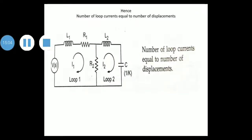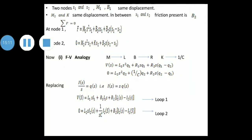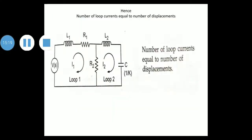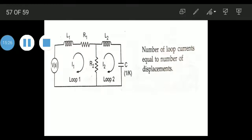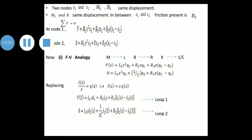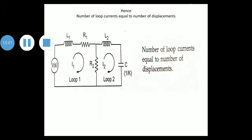We draw the loop circuit with two currents I1 and I2 in two loops. In loop 1, the elements are L1, R1, and voltage V. R2 is common to loop 1 and loop 2, so draw R2 between them. In loop 2, L2 and capacitor C are present. This is the equivalent electrical circuit using loop analysis. Number of loop currents equals number of displacements.